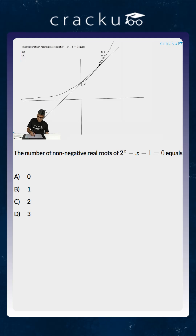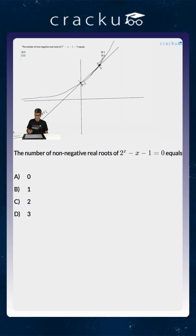The line y equals 2 to the power x will again intersect the straight line at one point over here and another point over here, so the intersection will be at two points. You can actually calculate this — coincidentally, one point is (1, 2).